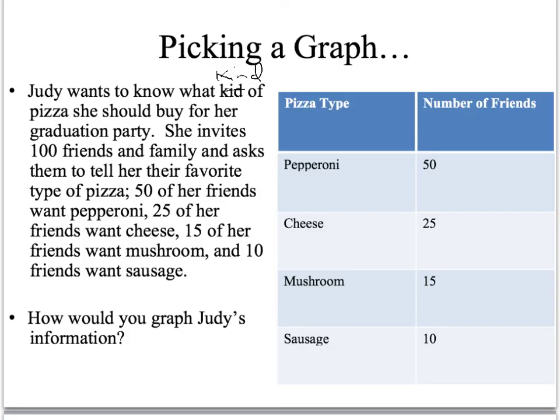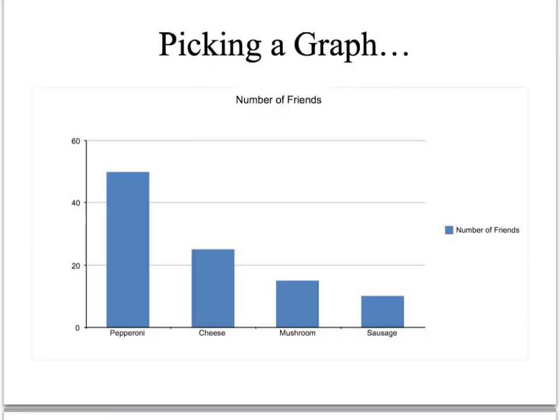Well, it's not really a comparison of things over time, so you're probably going to look. Your best graph for comparison is, a bar graph. And here she can clearly see the number of friends that will like each type of pizza and maybe make a decision on what she wants to order. Thank you.